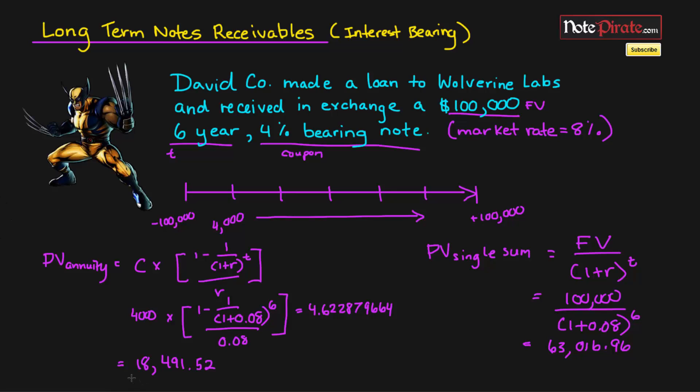And together, I'm going to try to make a squiggly bracket to go around all this. That will equal $81,508.48. So that is the present value for all of the cash flows in this question. But the thing is, this is different from the face value of $100,000. Why is that? Well,